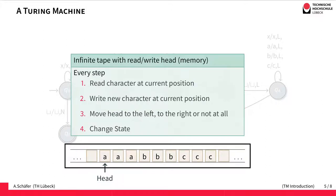The first special feature of the Turing machine is that it has an infinite tape with a read-write head. This infinite tape is our memory. At every step the Turing machine will read a character at the current position of the head, write a new character at the current position (which can be the same character that was read), and then it is able to move the head to the left, to the right, or not change position at all.